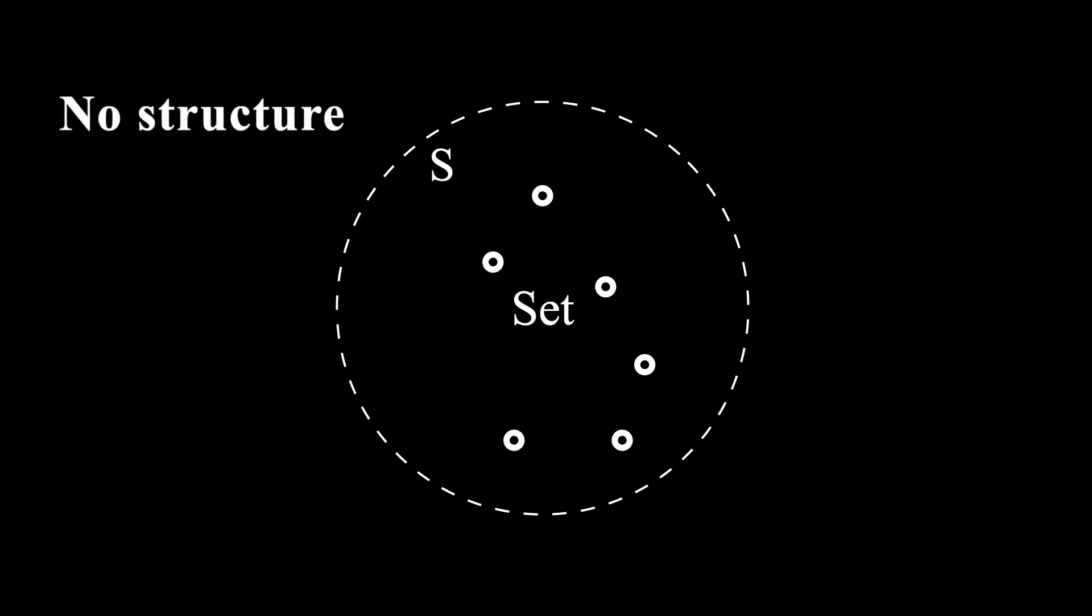One of the most basic ideas in mathematics is a set, which is just a collection of objects—any objects. A set has no structure. It doesn't even have a notion of whether one object in the set is larger or smaller than another. It simply consists of the objects, nothing more, nothing less.